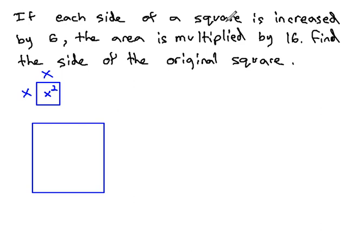On the bigger square, the square is increased by 6. Each side is increased by 6. So it was x, to increase it by 6, we have x plus 6 on both sides. Its area then is x plus 6 times x plus 6, or (x+6) squared.